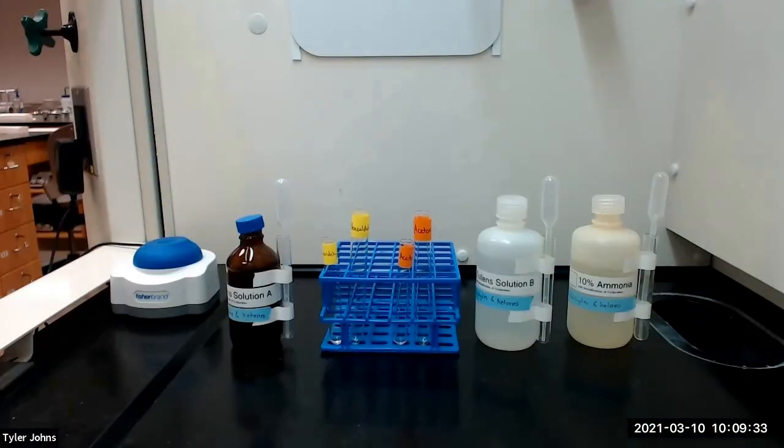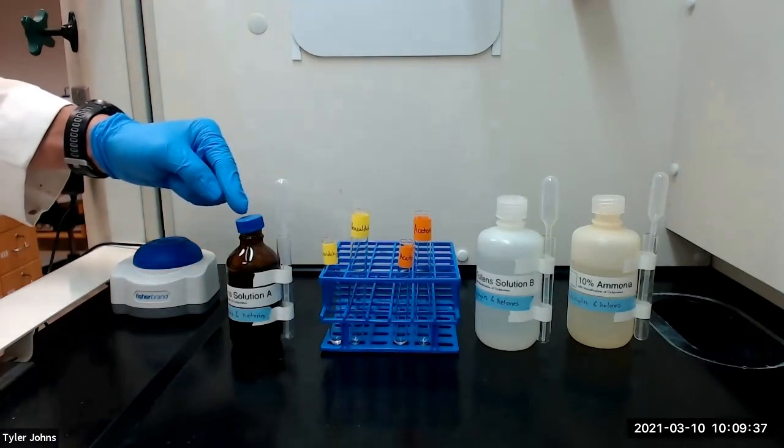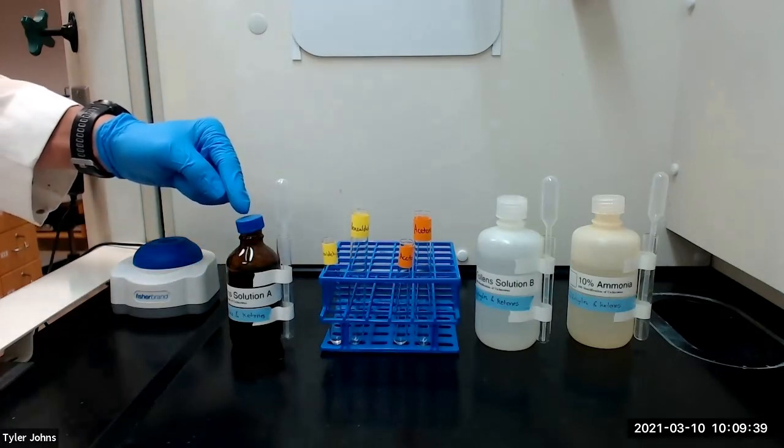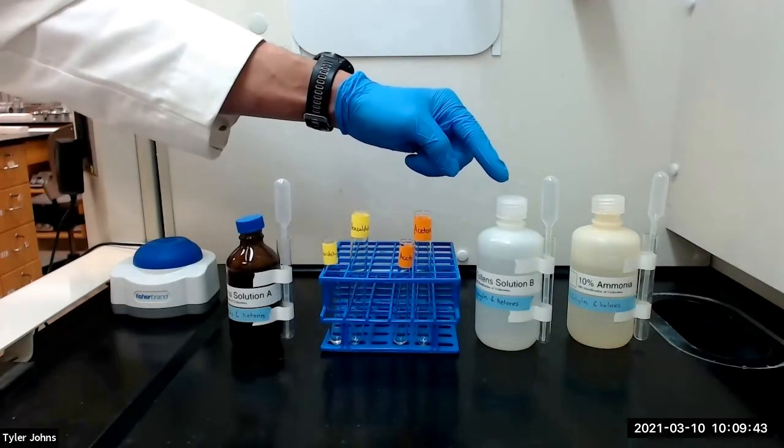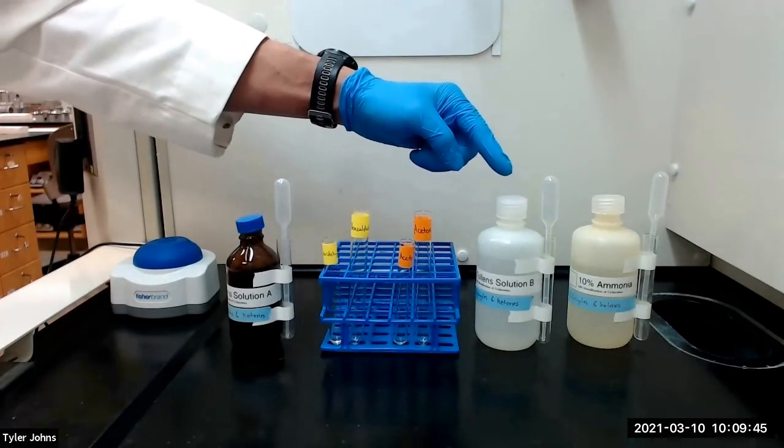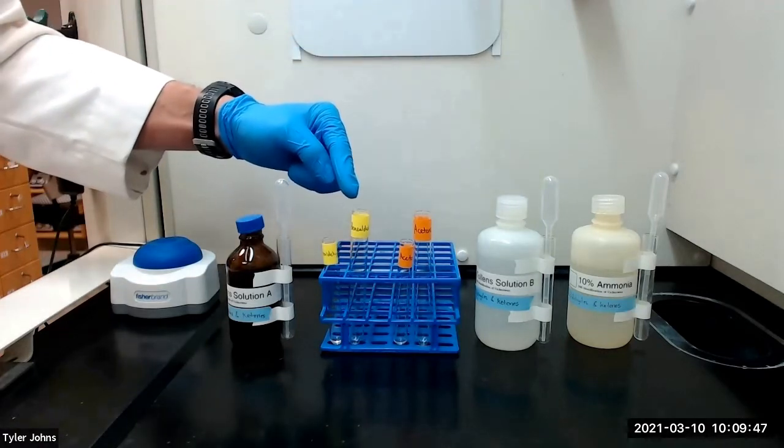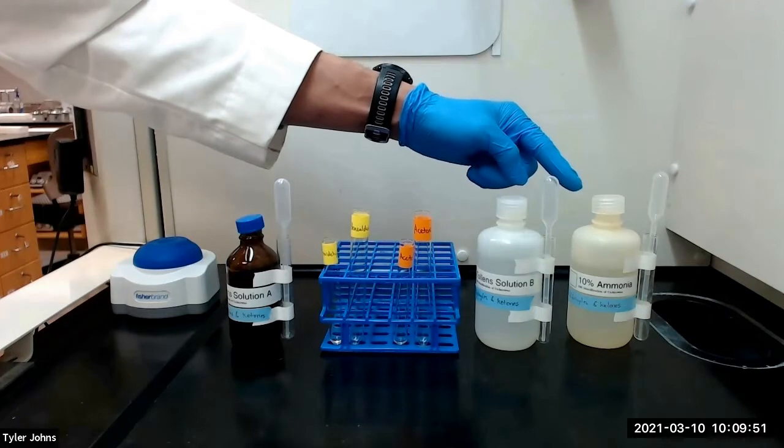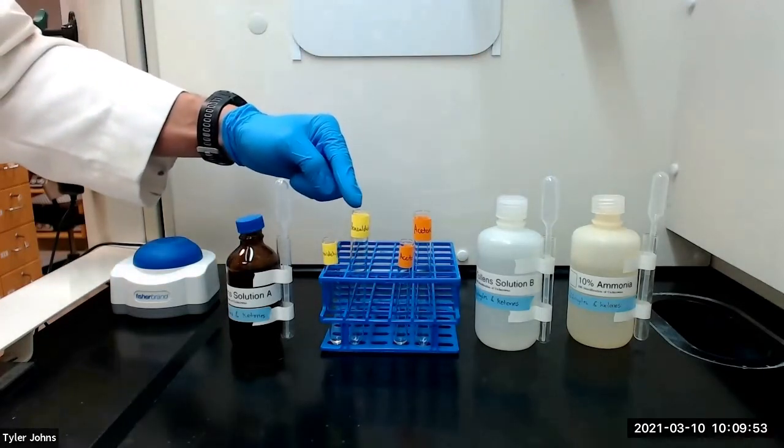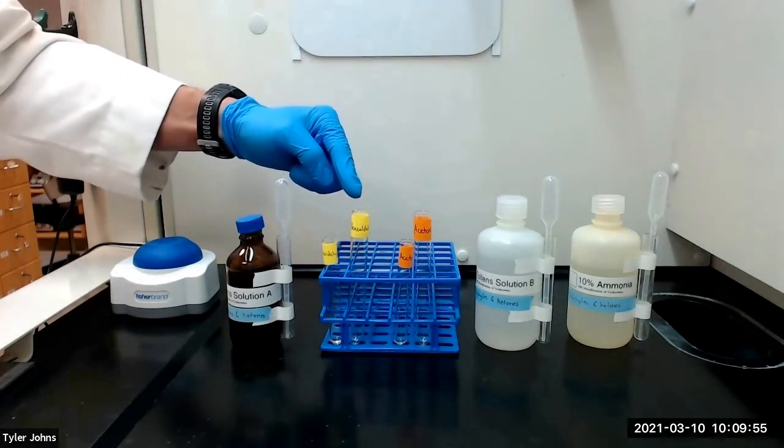We will next prepare the reagent for each test compound by mixing one milliliter of Tollens solution A, a silver nitrate solution, with one milliliter of Tollens solution B, a 10% sodium hydroxide solution. A precipitant of silver oxide will form. We will then add enough 10% ammonia solution to the reagent mixture to just barely dissolve the silver oxide.